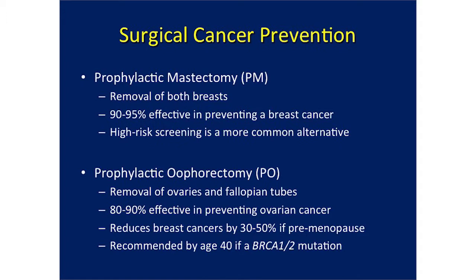Other strategies include surgical cancer prevention. For breast cancer, this includes prophylactic mastectomy — removal of both breasts to prevent cancer. It's exceptionally effective: 95% reduction in risk. But even the most high-risk women might be reluctant to do this because it's quite invasive and irreversible, so high-risk screening with MRI and mammogram is a more common alternative. For women with BRCA mutations, there's also a high risk of ovarian cancer, and so they are advised to remove ovaries and fallopian tubes, which greatly reduces their risk of ovarian cancer and can also reduce their risk of breast cancer by inducing early menopause.